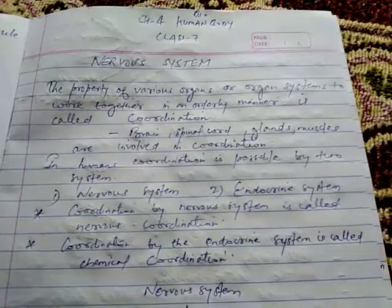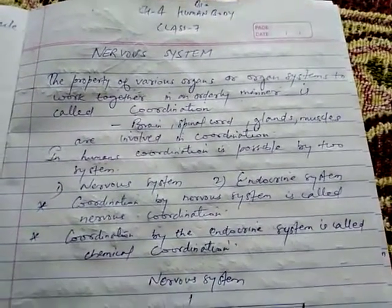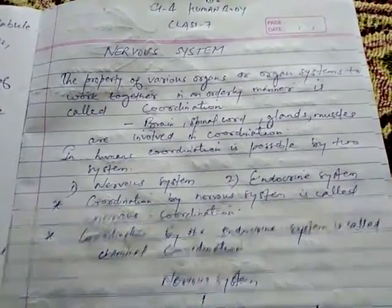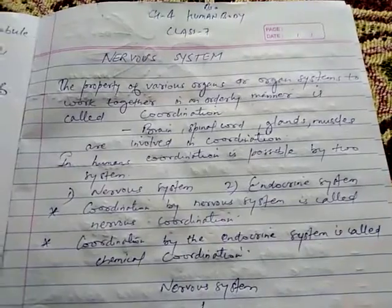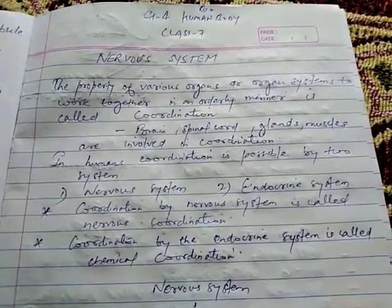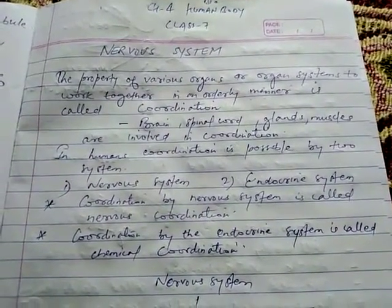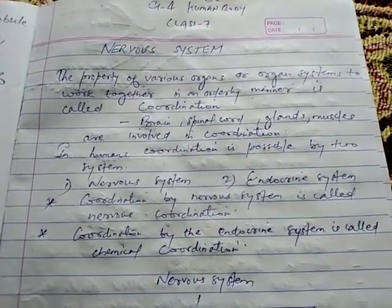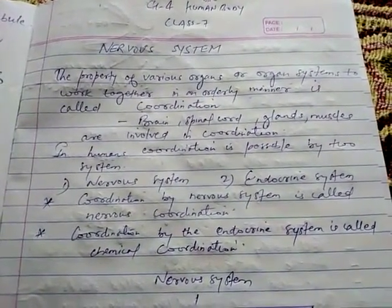Good morning students. Today we are going to discuss chapter 4 human body of class 7th biology. Today's topic is nervous system.